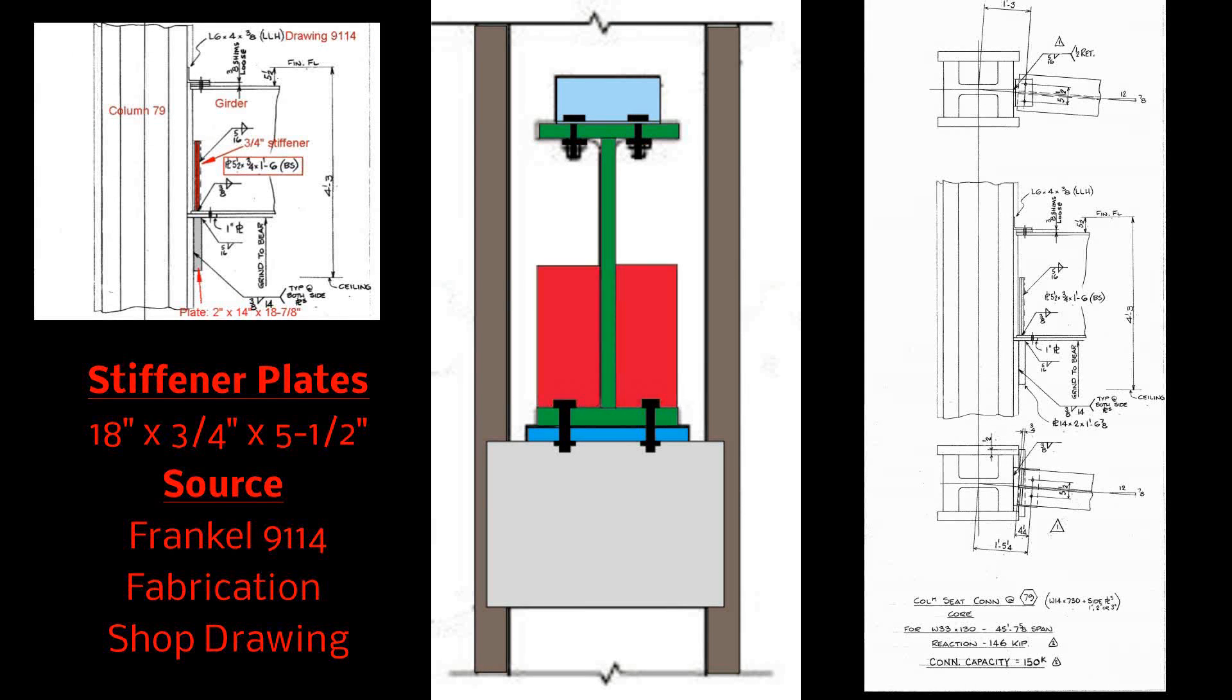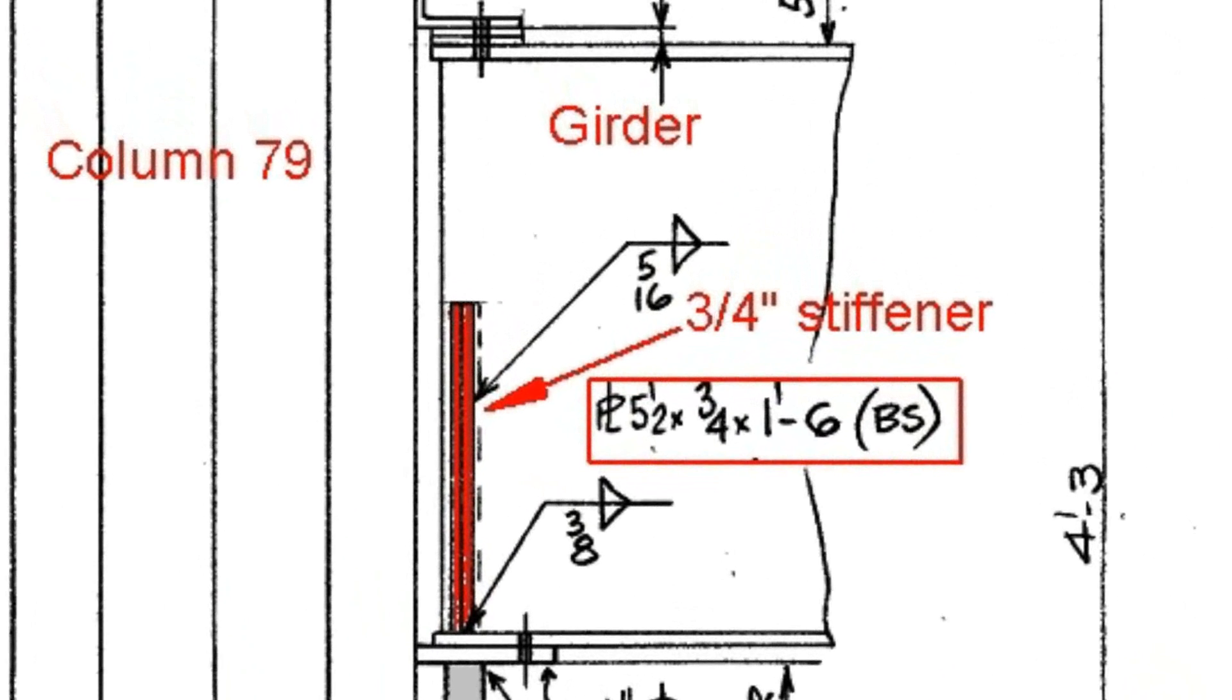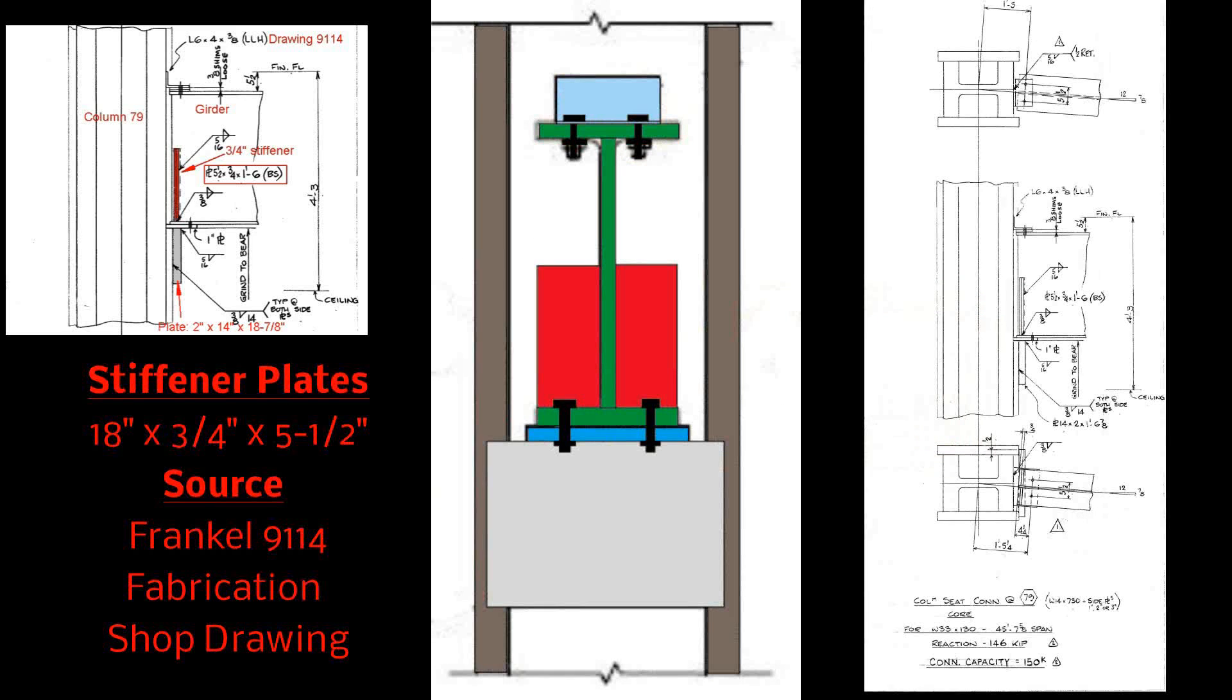So let's take a look at the elements that made up this connection. First of all there are the stiffener plates, you can see there are two, one either side of the girder. When you look at how they're connected, they're welded at the bottom and the sides by 3/8ths and 5/16th welds. They're called out as PL, they're 5 1/2 by 3 quarters by 1 foot 6 and the BS means that they're on both sides. You can see them in Frankel 9114 fabrication shop drawing.